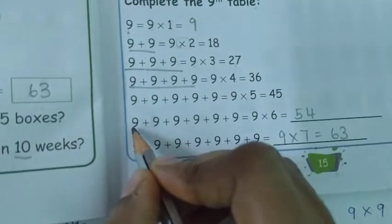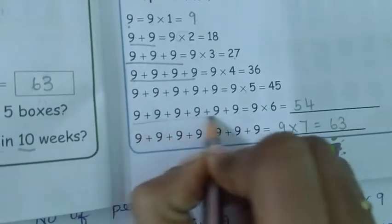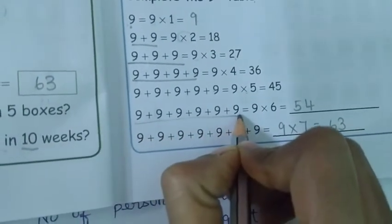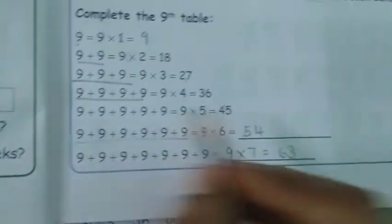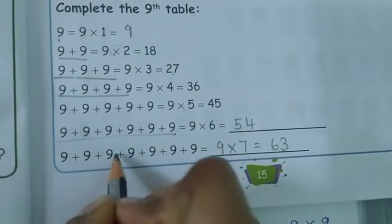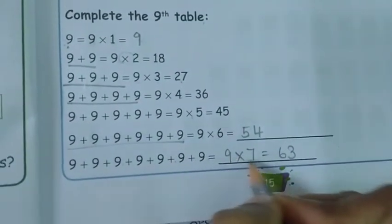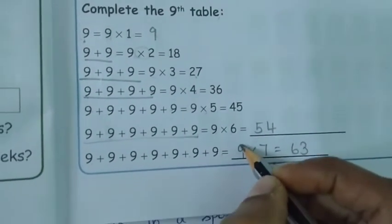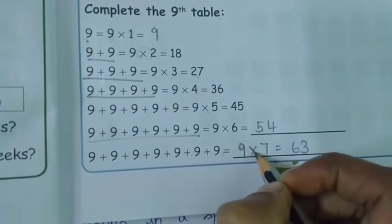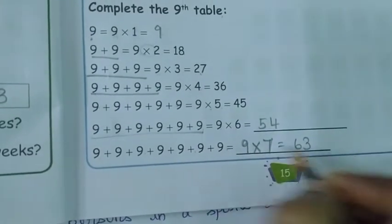Next, 1, 2, 3, 4, 5, 6 — 6 times the 9 will be continuously added. So 9 sixes are 54. Next, 1, 2, 3, 4, 5, 6, 7 — the number 9 is continuously added 7 times. So 9 sevens are 63. Write the answer this way.